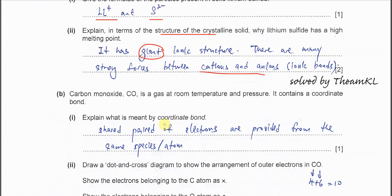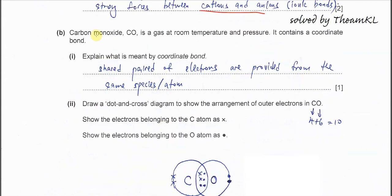Part b. Carbon monoxide is a gas and it has coordinate bonds. Part i. Explain what is meant by coordinate bonds. Very easy. Shared pair of electrons are provided from the same species or atom.